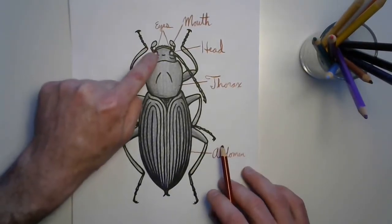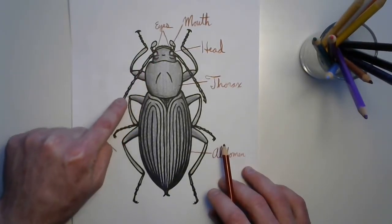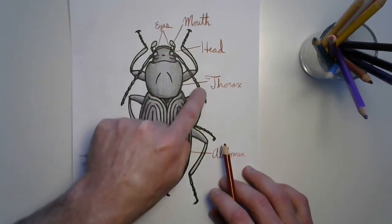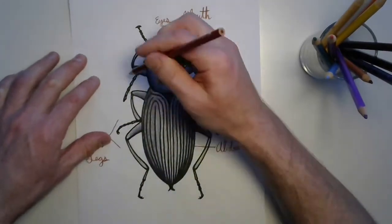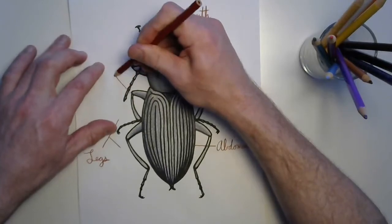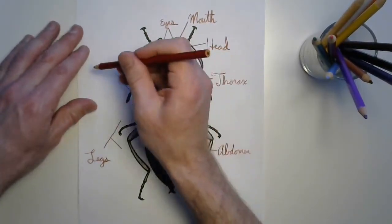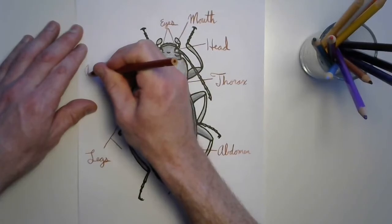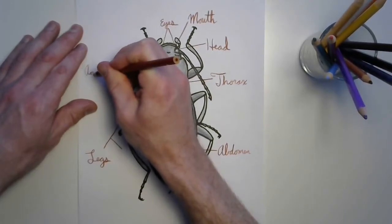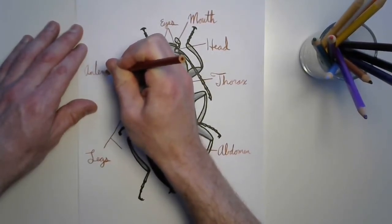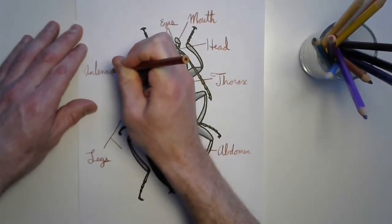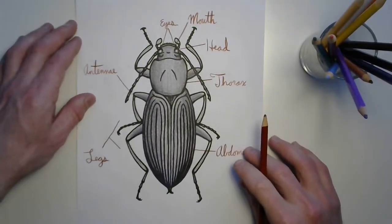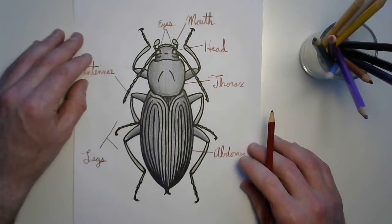They also have an extra set of sensory organs called antennae. The antennae allow them to feel and sense and communicate as well, depending on the type of insect. Sometimes it can be like an extra pair of eyes or ears.